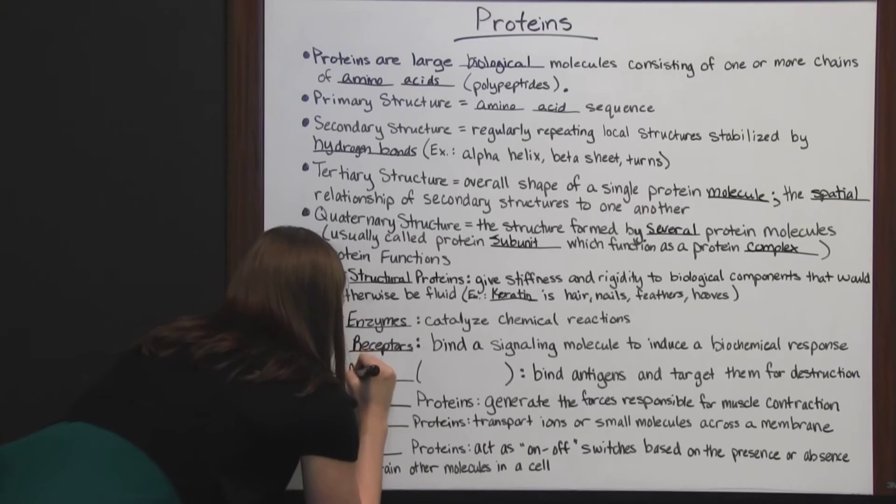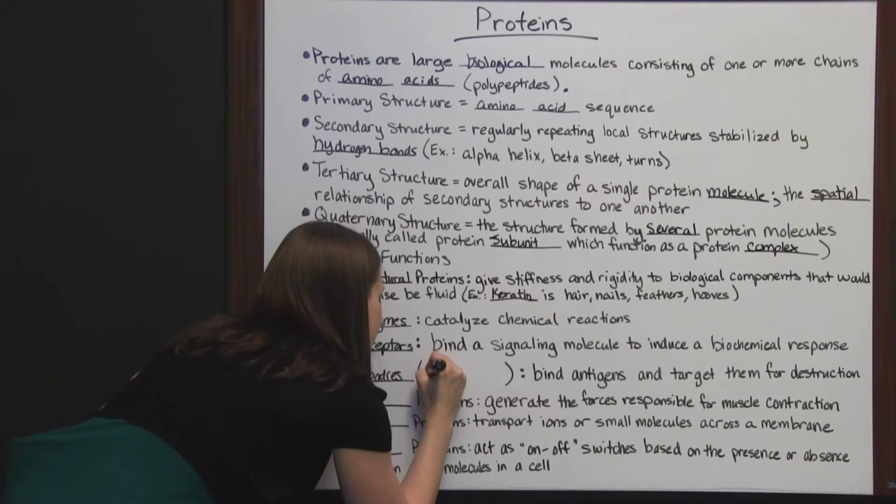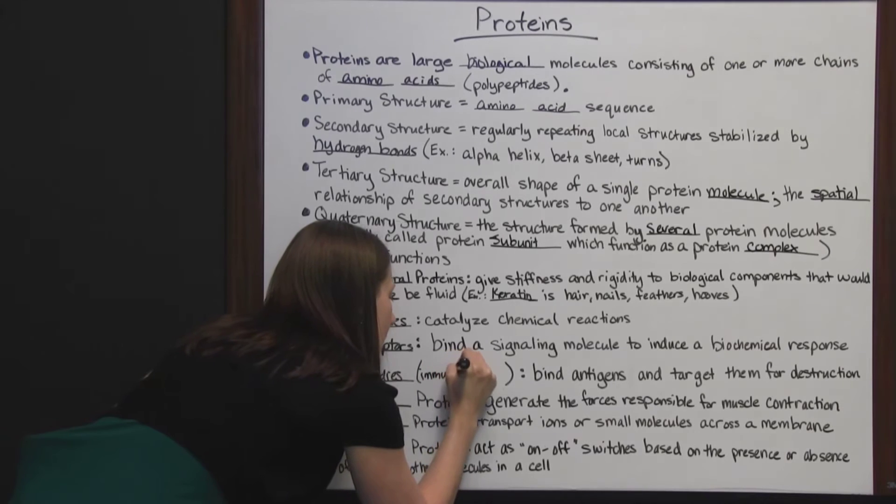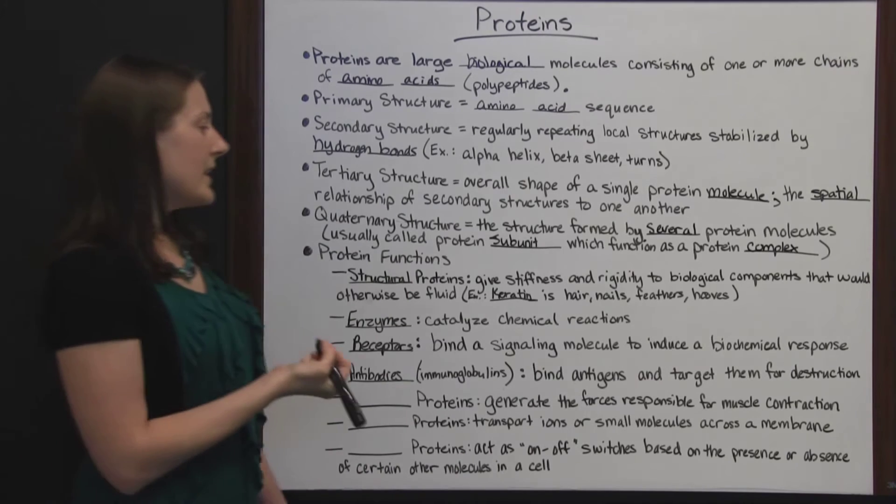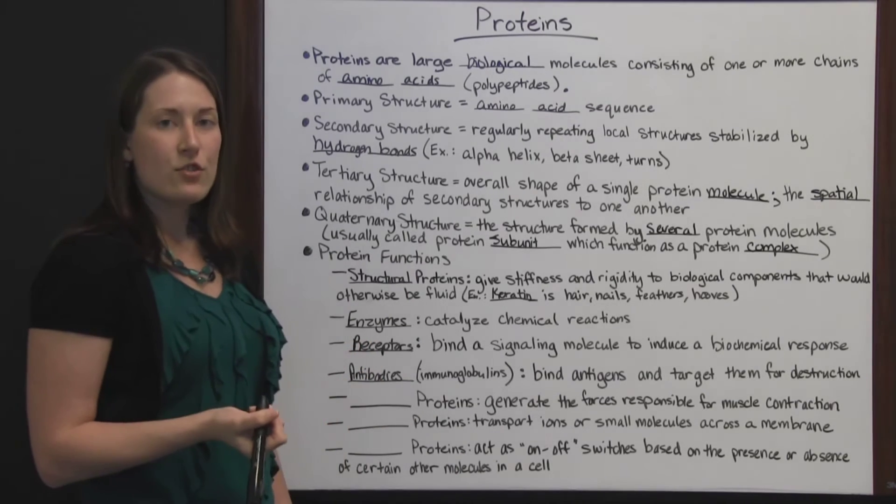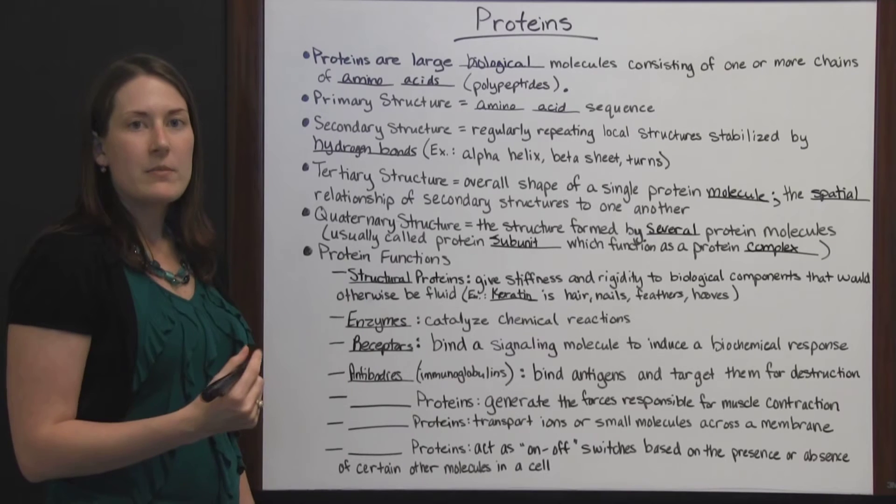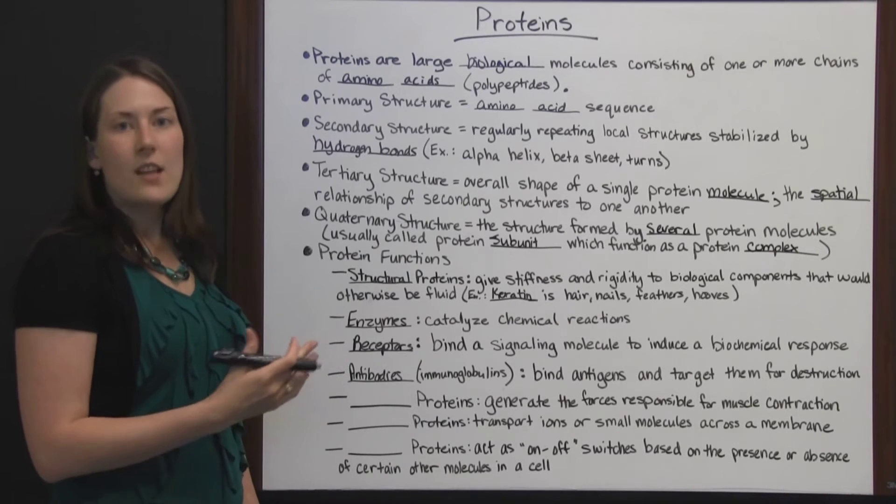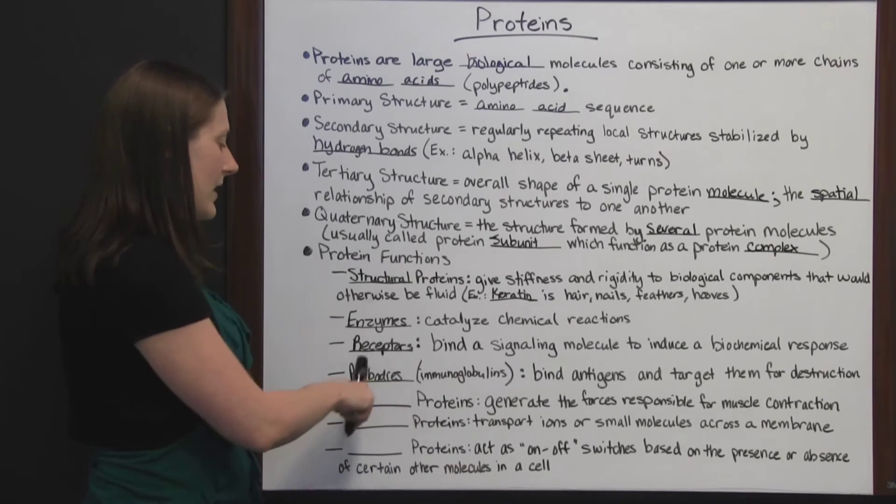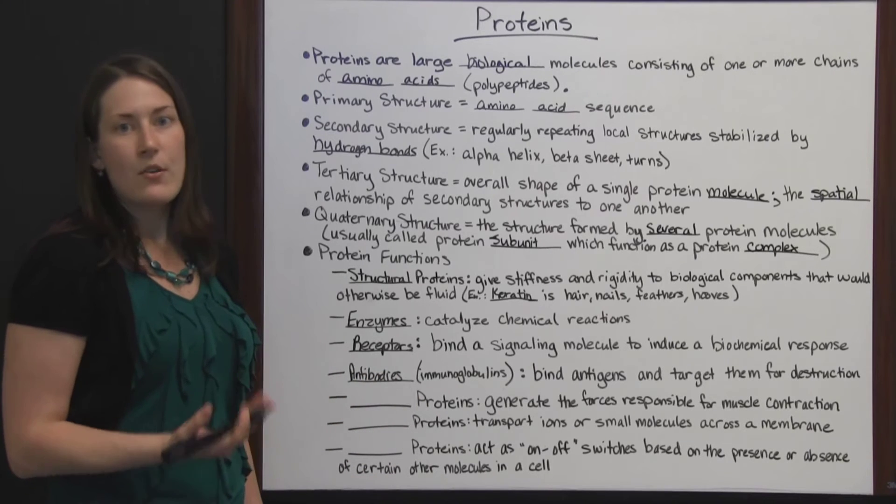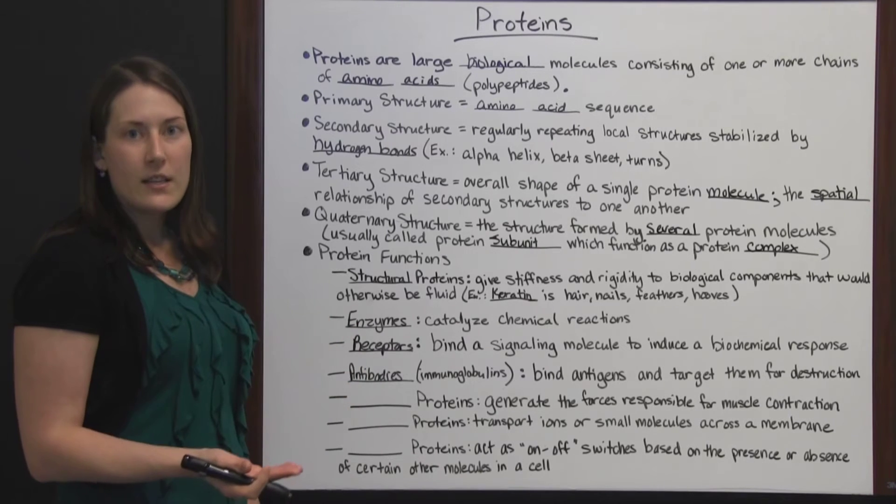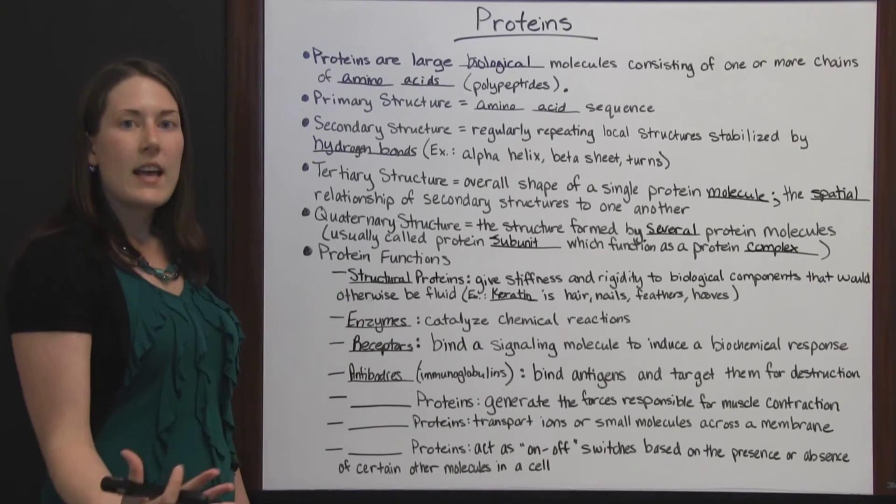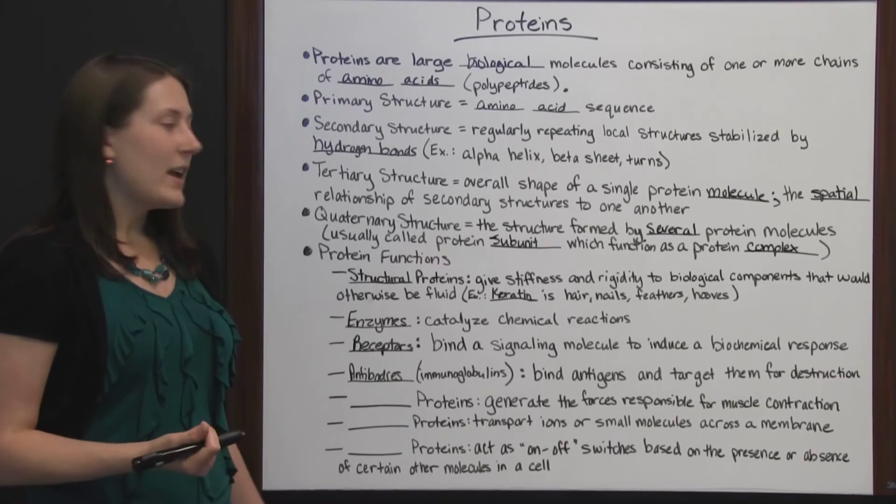Next, you have antibodies, which are also known as immunoglobulins. These bind antigens and target them for destruction. An antigen is a foreign body that comes into the cell and it's not welcome, it's seen as a threat. These antibodies, or immunoglobulins, are part of the immune system. They bind to the antigens or that foreign body and they target them for destruction so that then they are destroyed and removed from the cell and the threat is eliminated.